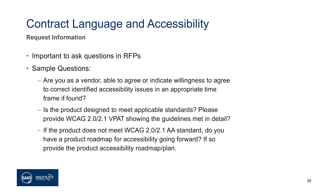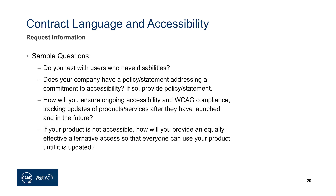When requesting information in RFPs, ask: do they use users with disabilities to test? Do they have a policy or statement? What are they doing to ensure WCAG compliance as they make updates? What is the company's change management process as they make product or service updates — the tracking of updates to have that launch? This could be a roadmap or a tracked change, because commonly companies won't update their VPAT every single time they update a version. So if you have a VPAT, how can you still learn what changes have been made? That's where change management can be very useful.